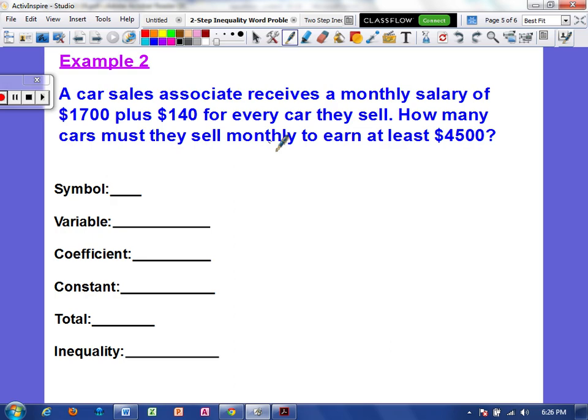Alright. So our clue word here for the symbol would be at least. So if something is at least, then you know that it has to be equal to that amount or greater than that amount. Because we want that to be like the minimum. We want everything to be greater than that or that could be the smallest amount that's there. So it's greater than or equal to. And you can refer back to the other page that has all the keywords to see that at least means it has to be greater than or equal to.